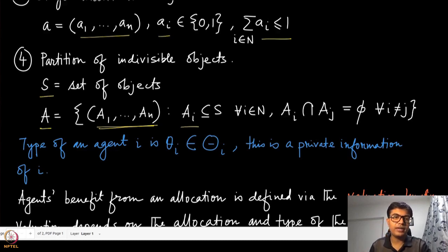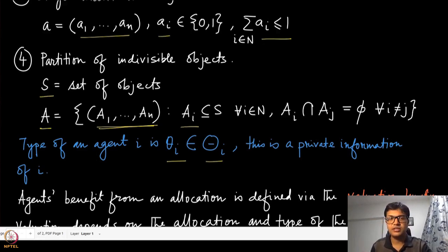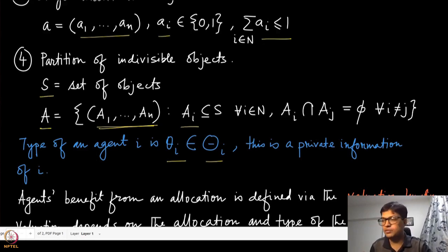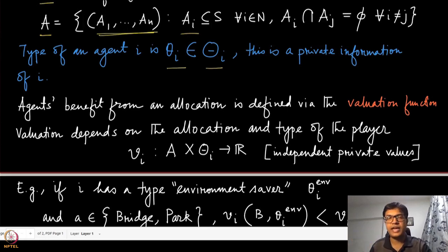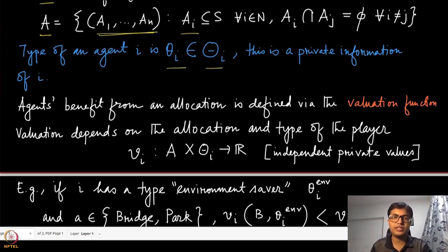We define the type of agent i as lowercase theta_i, which belongs to capital theta_i. This type represents the private information of that agent, and it is this assumption of private information that brings us to the idea of truthfulness or incentive compatibility. We also need to model the benefit of an agent: if an agent has a specific type and a specific allocation decision has been made, how much satisfaction or happiness does that agent get? This is captured using the valuation function.